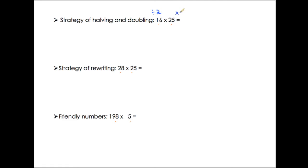16 divided by 2 is 8. 25 times 2 is 50. So I can do 8 times 50, which is 400. Can I keep dividing? Yes, you can. You have 4 and if you multiply 50 by 2 again you have 100. So 4 times 100 is 400. The first strategy is halving when you divide by 2 and doubling when you multiply by 2.